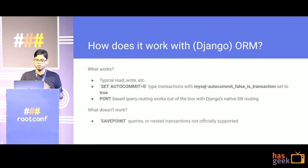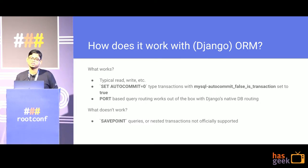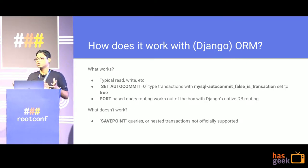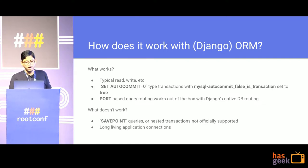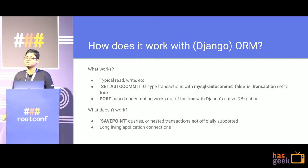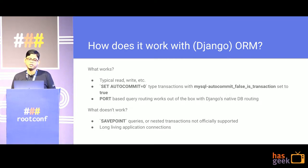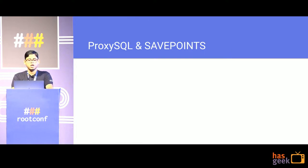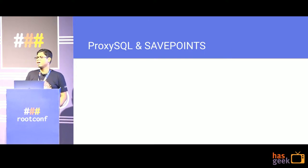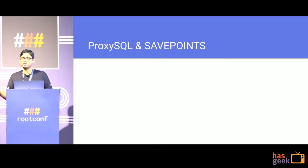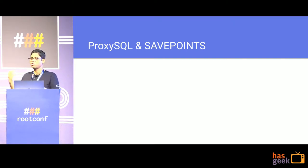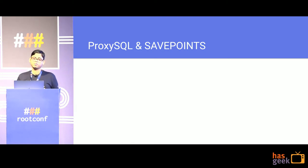What doesn't work? Officially documented save point queries and nested transactions do not work with ProxySQL. Long-living connections from applications also don't work that well — if you have application pooling, you might consider disabling it or tweaking the connection timeout. At Zapier, we use save points and nested transactions, which was a blocker to going to production.